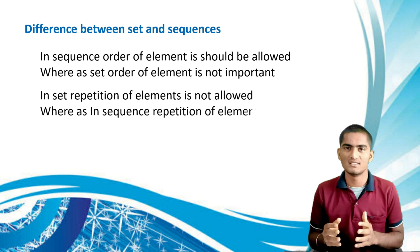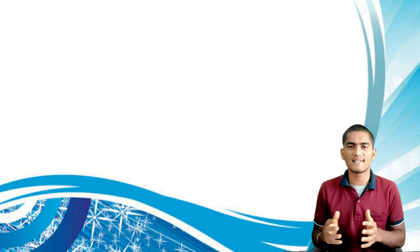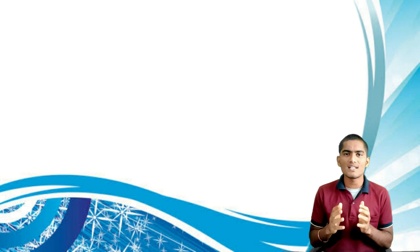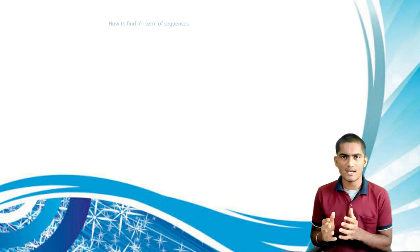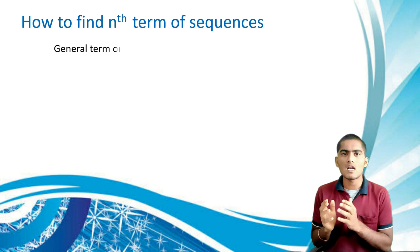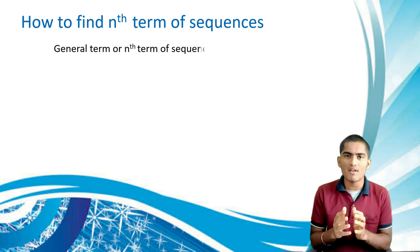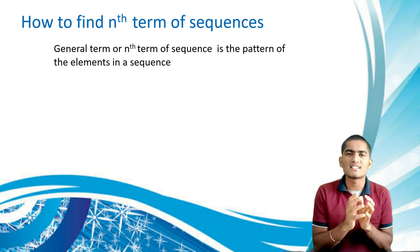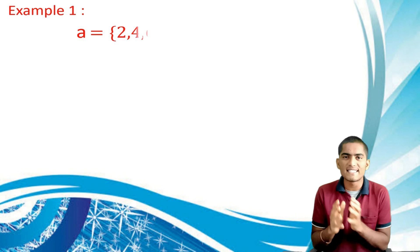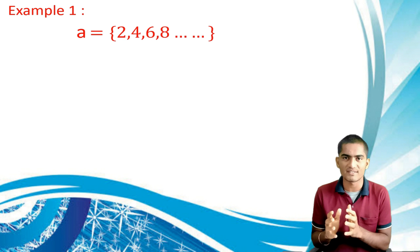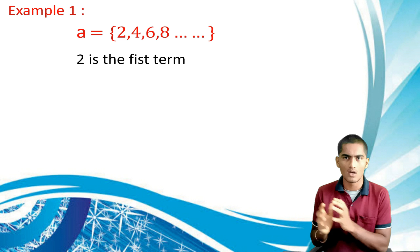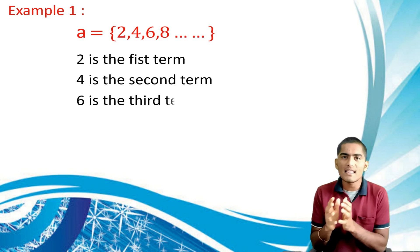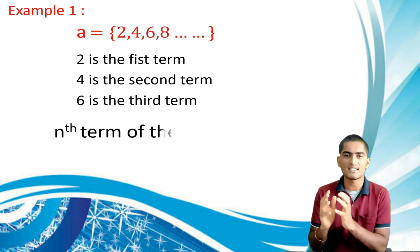The general term or nth term of a sequence is denoted by a_n, where n is the subscript. Many students have doubt about how to find the nth term — it is simply the pattern of elements in a sequence. For example, the sequence of all even numbers 2, 4, 6, 8, and so on: these are all multiples of 2, so the nth term is 2n.